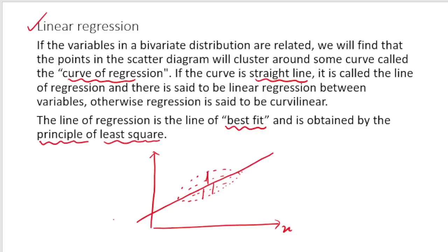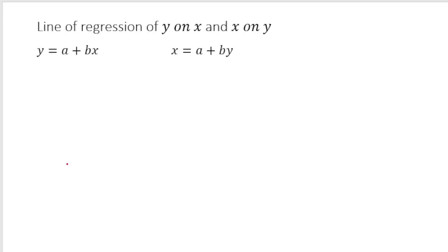In the mathematical treatment, there are two kinds of regression lines. One is the line of regression of y on x, where x is the independent variable and y is the dependent variable. The other is the line of regression of x on y, where y is the independent variable and x is the dependent variable. We first find the normal equations to determine the coefficients a and b.